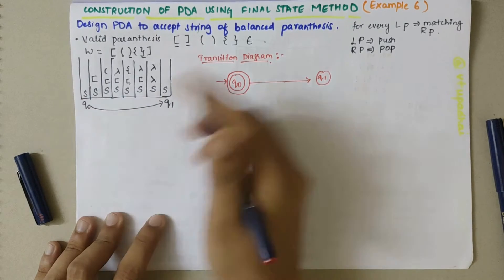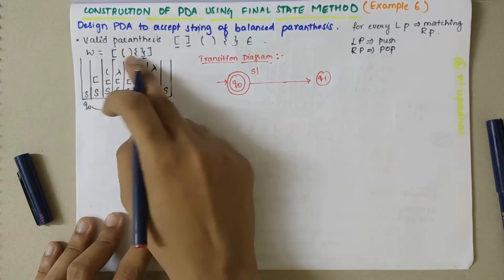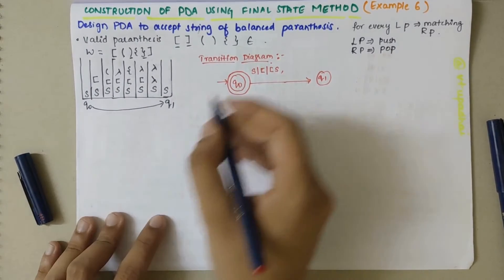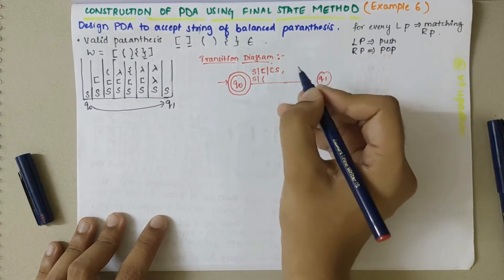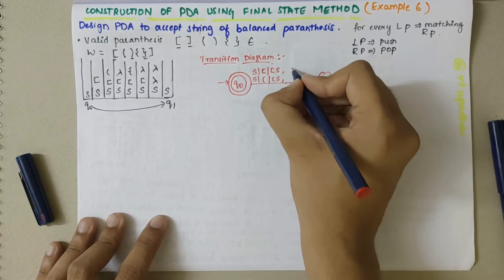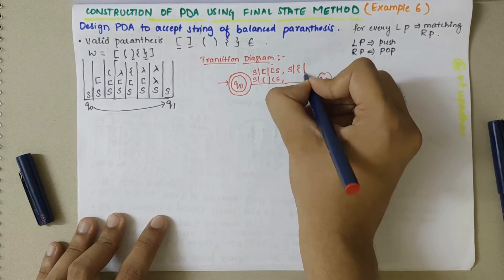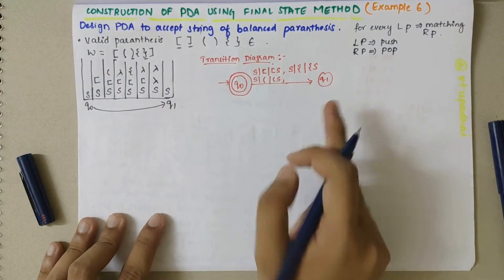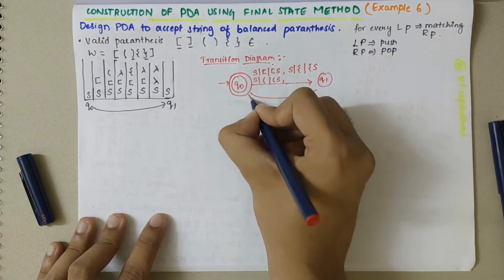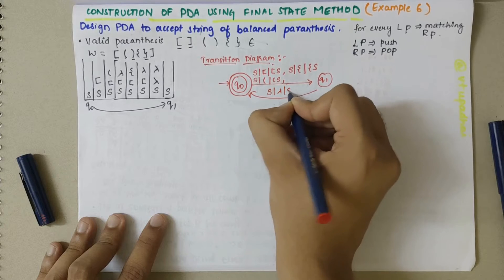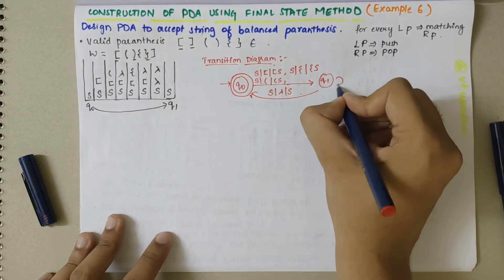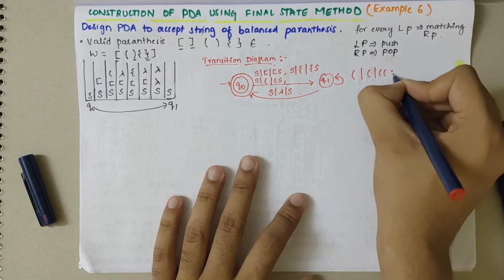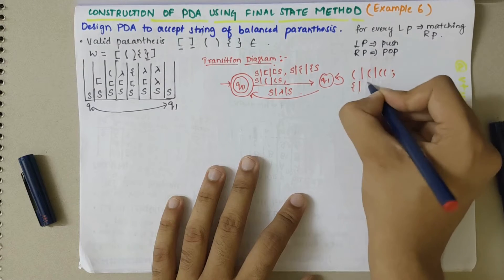In Q0, S was on top of the stack. Over input of a square bracket, I get that symbol. Similarly, with S on top over an open bracket, I get open bracket and S. If S is on top and a curly brace open bracket is encountered, I get open bracket and S. This leads to a Q0 to Q1 state transition. If it's empty, from Q1 there is a self-loop with open bracket and the corresponding transitions for curly braces as well.